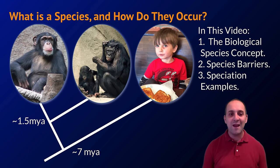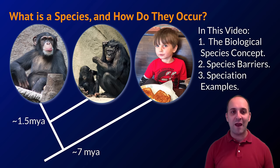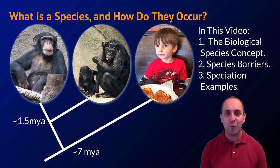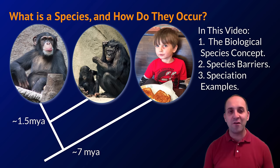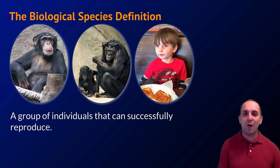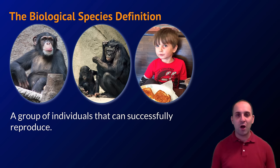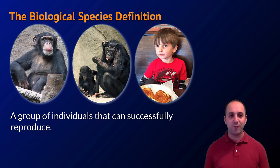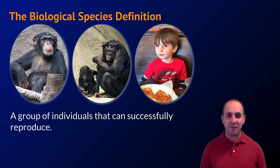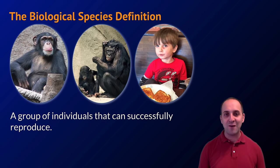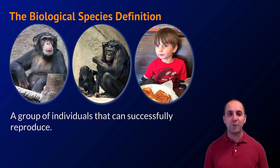Here's a phylogenetic tree that separates three individuals — we can see their splits, and the split between the two on the left is more recent, but still everybody's a different species. Let's get our head around this notion of a biological species: a biological species is just a group of individuals that can successfully reproduce. Chimpanzees, bonobos, and human beings are all members of different species because we only reproduce with other members of our particular biological group.